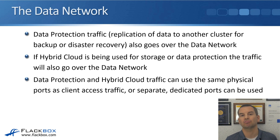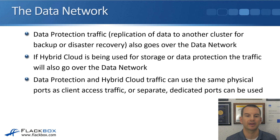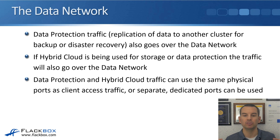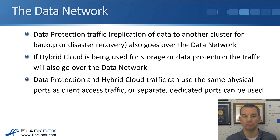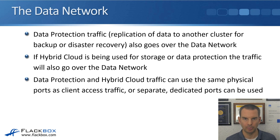Data protection traffic — where data is replicated to another separate cluster for backup or disaster recovery — also goes over the data network. And if hybrid cloud is being used for storage or data protection, so if you've got a private or public cloud provider and you're replicating data to and from there, that traffic will also go over the data network. Data protection and hybrid cloud traffic can use the same physical ports as your NAS and SAN clients, or you can split that out into separate dedicated physical ports.